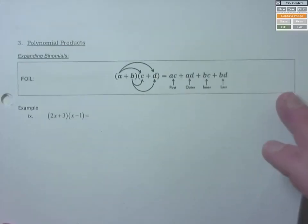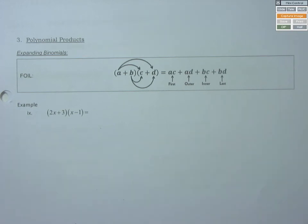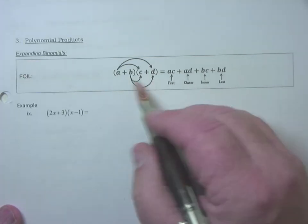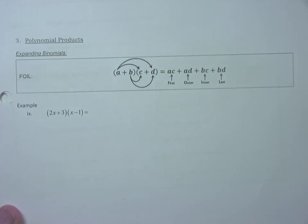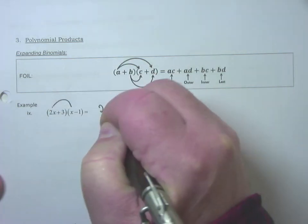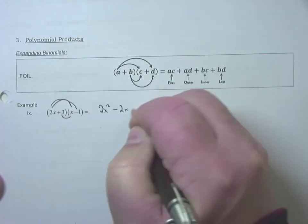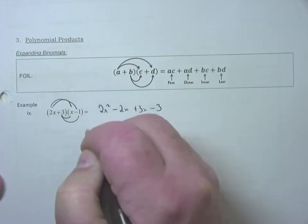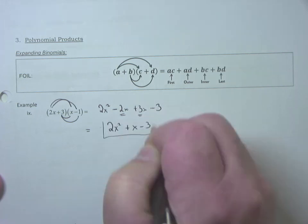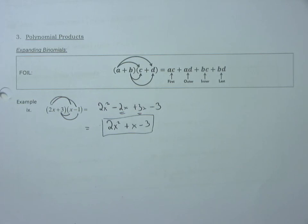Another key algebra skill is polynomial expansion, also known as FOILing it out. If I have (a + b)(c + d), that's ac + ad + bc + bd. For example, (2x + 3)(x − 1) expanded is: 2x times x equals 2x², 2x times −1 equals −2x, 3 times x equals +3x, 3 times −1 equals −3. Combining like terms: 2x² + x − 3. Clean it up first before doing calculus.